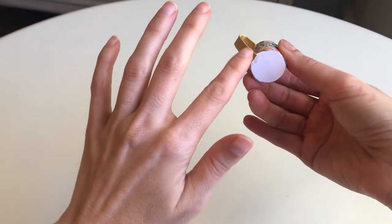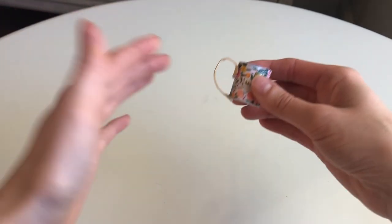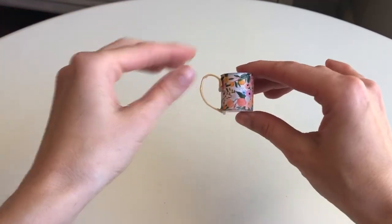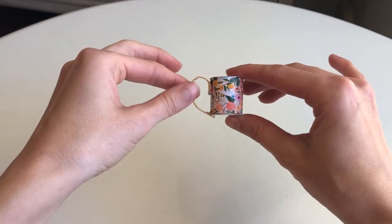And if you have too much hot glue on the bottom that's okay because you will be able to cut it off in just a minute once it dries. So just shape your handle.